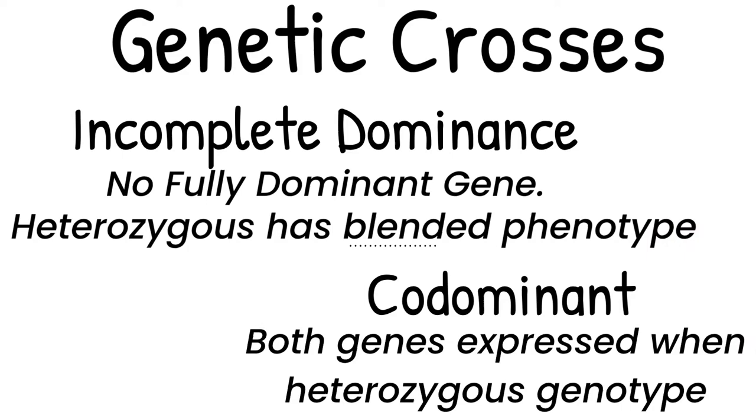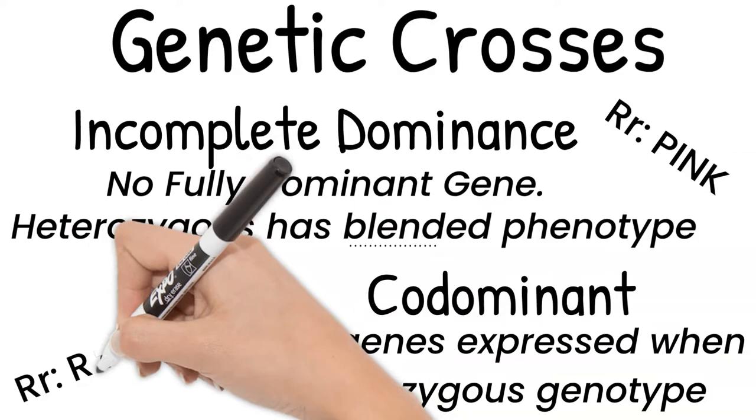This is different than incomplete dominance. In complete dominance, the red and white alleles blended together to create pink in our example. If they had been codominant, then the flower would have been red and white.